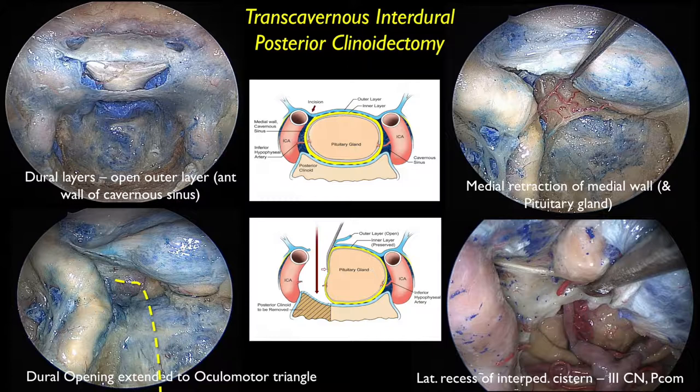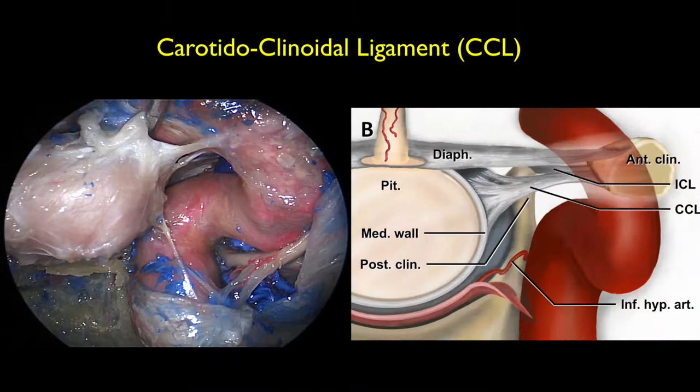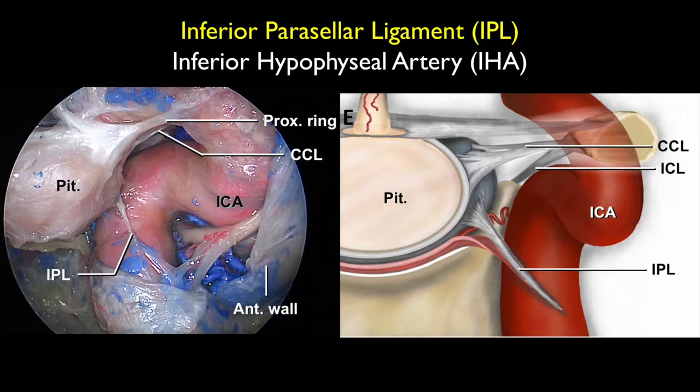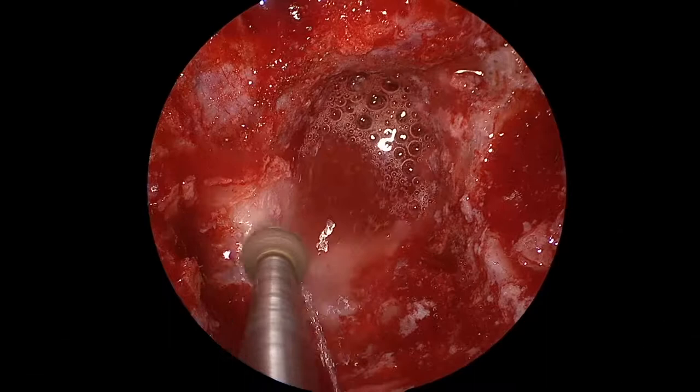This approach is based on understanding the anatomy of the layers that form the cavernous sinus, including the medial wall of the cavernous sinus and the recently described paracellar ligaments. These ligaments anchor the medial wall to the carotid, and we need to transect this ligament as well as the inferior hypophyseal artery to get access to the posterior clinoid. The approach gives us access to the brainstem, the basilar artery and its branches, and it is very important to understand the anatomy of the sixth nerve at its different segments.